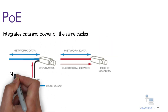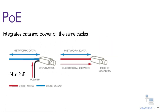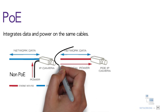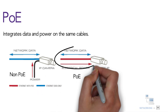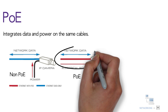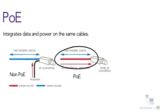As you can see, with a non-PoE device you need a power cable to power on the device and a copper cable for network data. But with PoE, it allows devices to receive power in parallel to data over existing twisted pair Ethernet infrastructure without making any modifications to it.